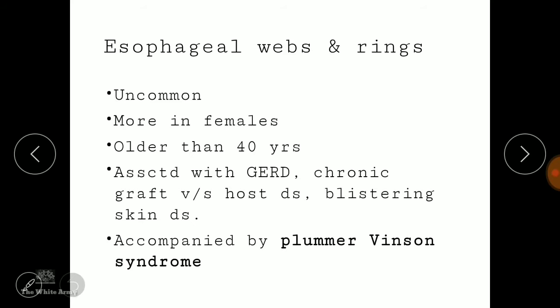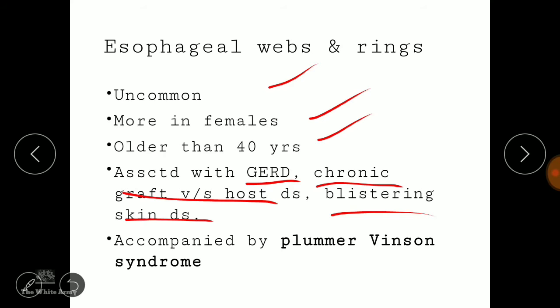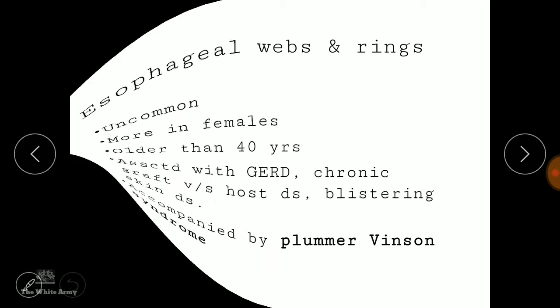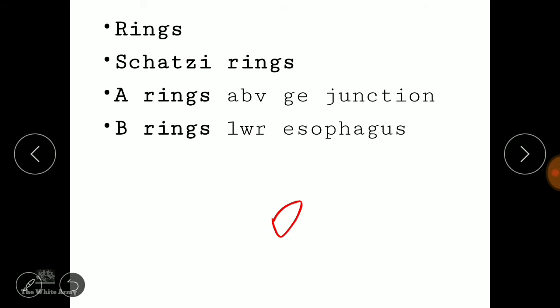Esophageal webs and rings are uncommon; if seen, they are more common in females older than 50 years. They are associated with gastroesophageal reflux disease, chronic graft-versus-host disease, and blistering skin disease. They are accompanied by Plummer-Vinson syndrome — a triad of iron deficiency anemia, esophageal webs, and glossitis. If the web or ring is above the gastroesophageal junction, it is called an A ring; if below in the lower esophagus, it is called a B ring.